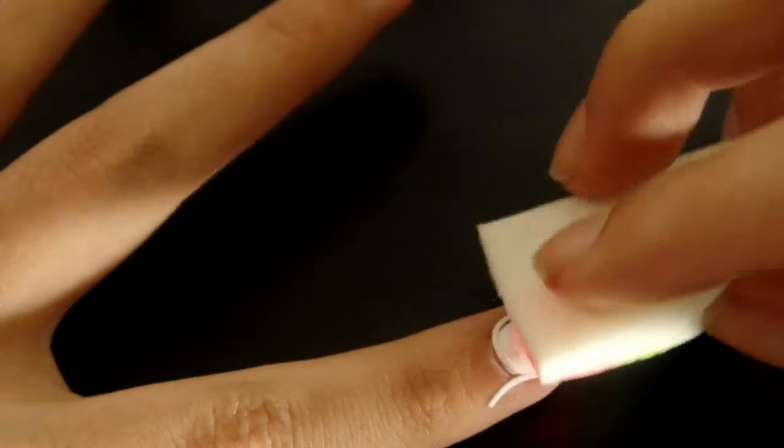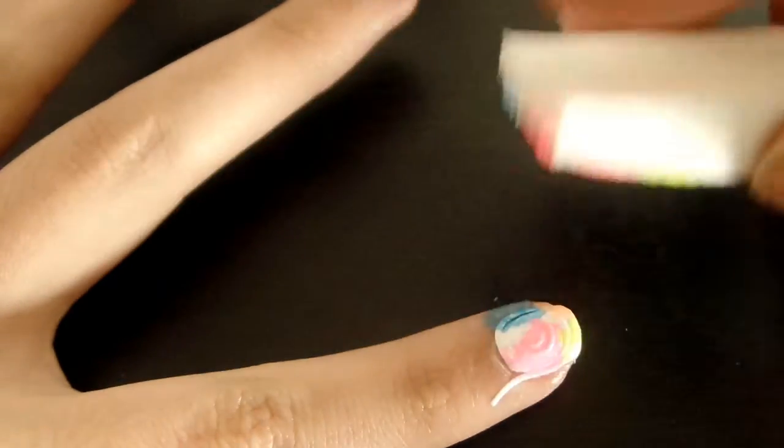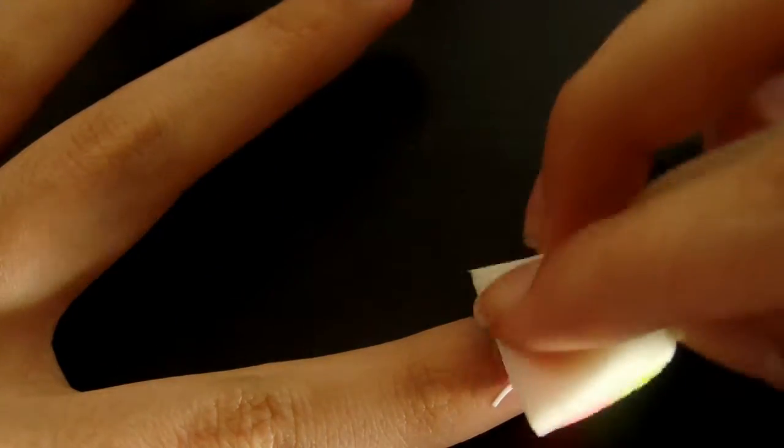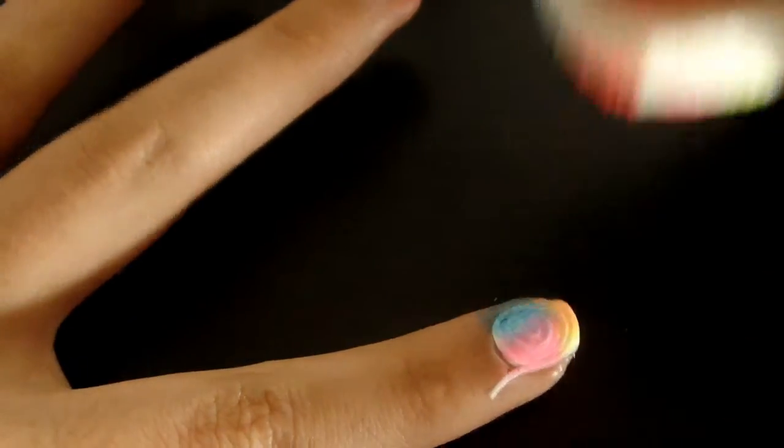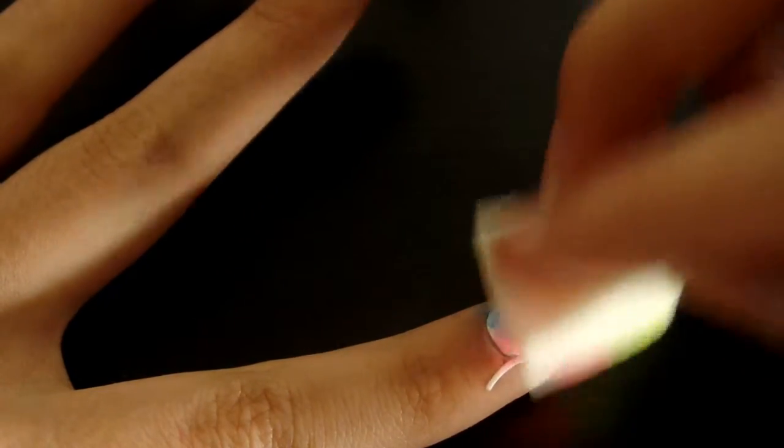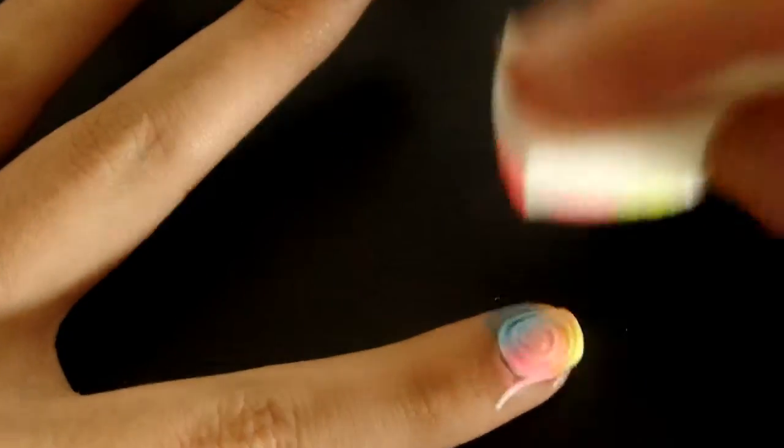Then you'll just take this and press it on. And I kind of tend to dab it a little bit. That's why I don't have to get it completely over the sponge. Just dab it.